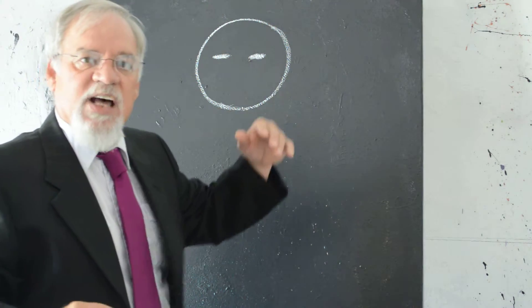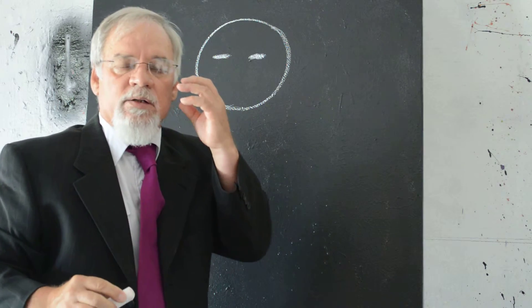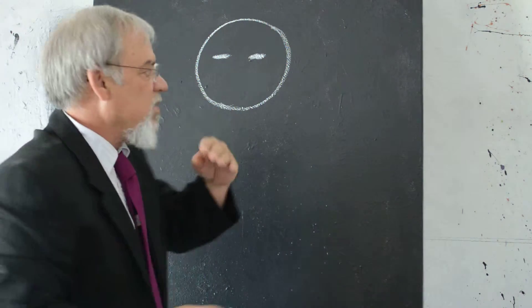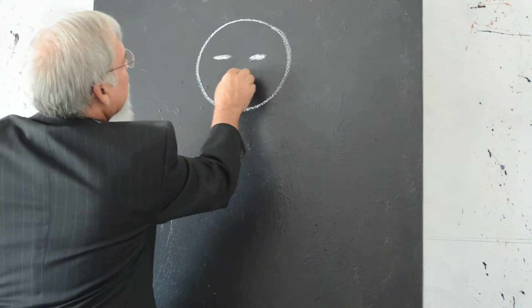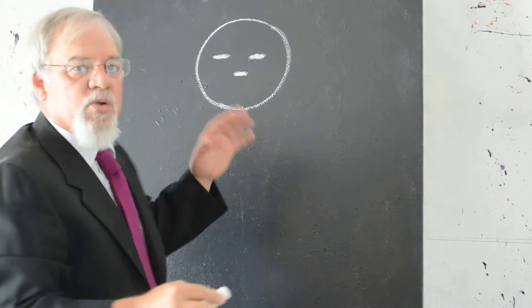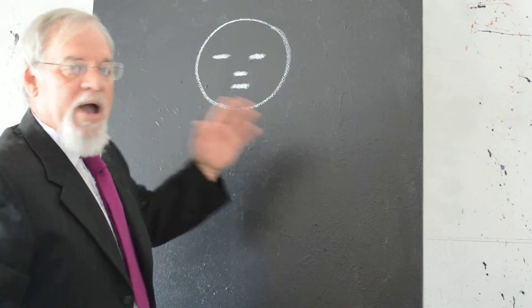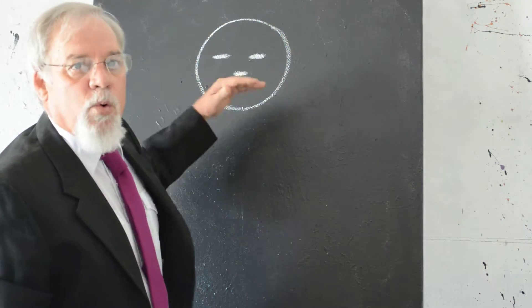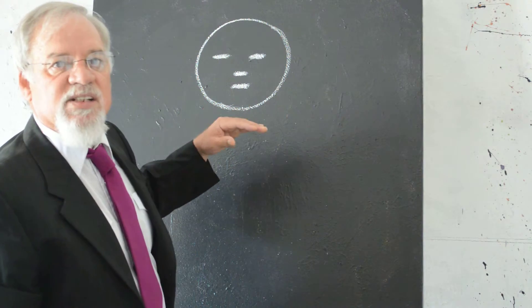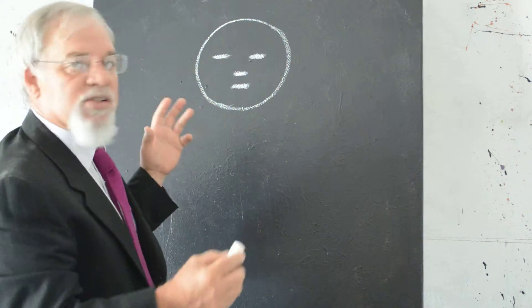Later we'll get into the zygomatic arches under the eye and the distances and all that. Next we're going to put the nose. Where is the nose in relationship to the eyes? And how far is the mouth away from the nose? It's very important to know these distances and anatomical references.